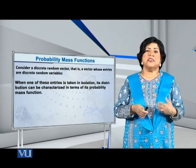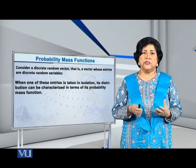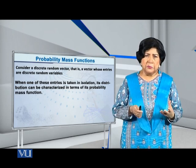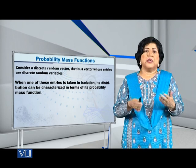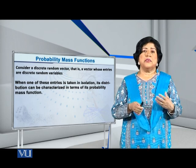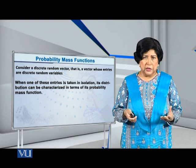Let us consider a discrete random vector—in other words, a vector whose entries are discrete random variables.